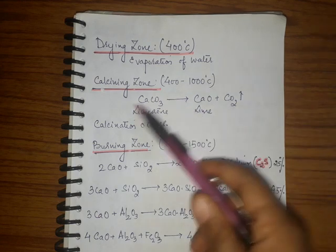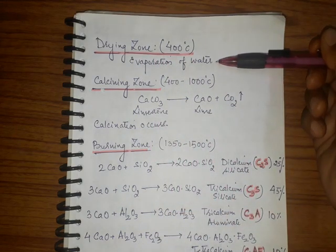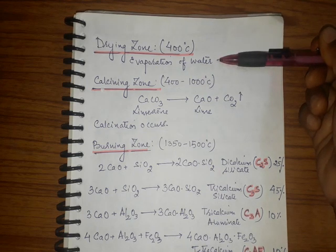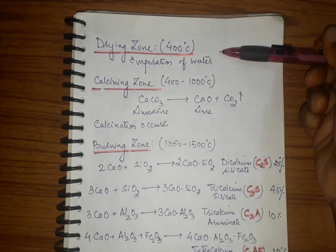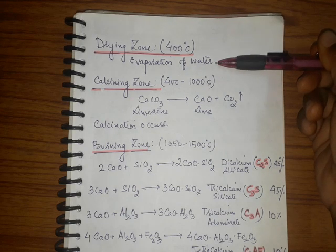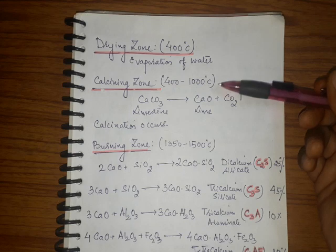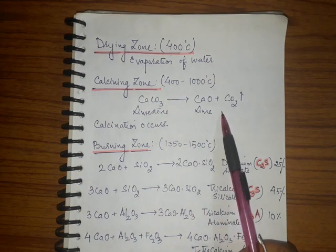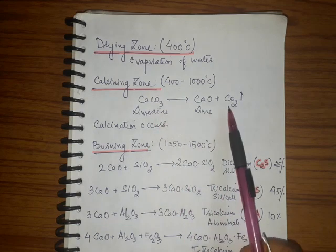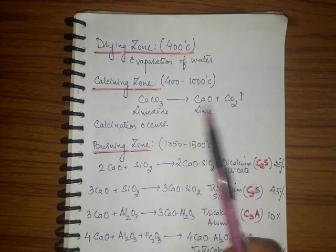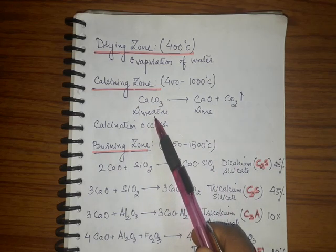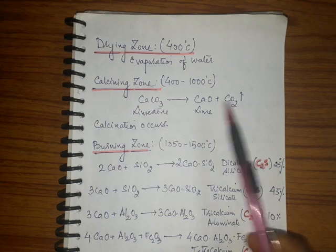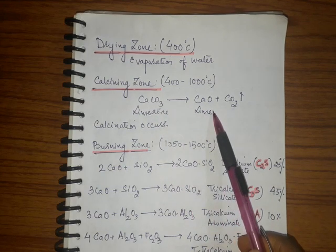In the drying zone, whatever moisture is present in the dry mix or slurry gets evaporated and all components are dried together. As the mixture moves toward the calcining zone, it undergoes calcination — the limestone is subjected to very high temperature, carbon dioxide is released due to decomposition, and what remains is lime, that is calcium oxide.